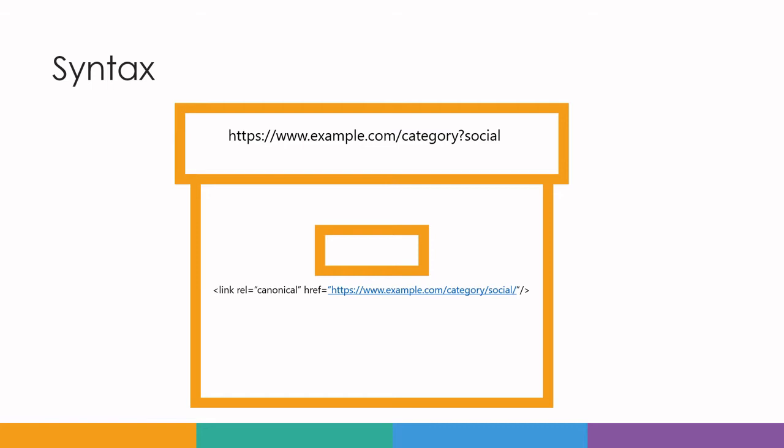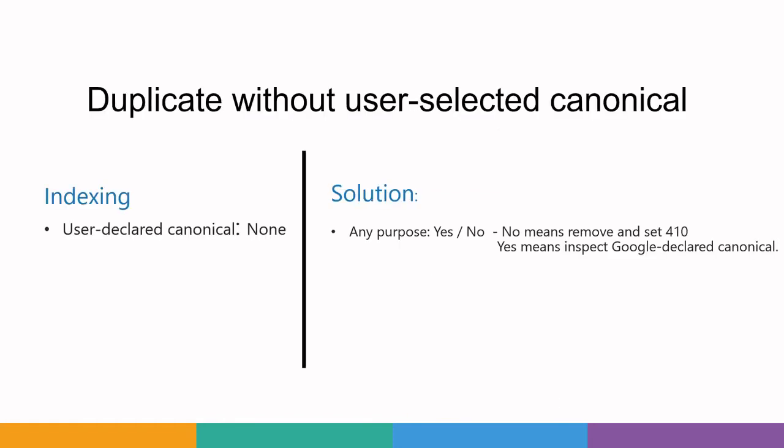For this we use the canonical tag. On every duplicate page, you have to mention your preferred version using the link element with relation canonical and the href pointing to your URL. This URL is your preferred canonical URL — the original URL. When search engines crawl a duplicate page, you are telling them: 'The page you are crawling is a duplicate, and this is my original version.' So you have to tell the search engines explicitly on every duplicate page which is your original canonical URL.